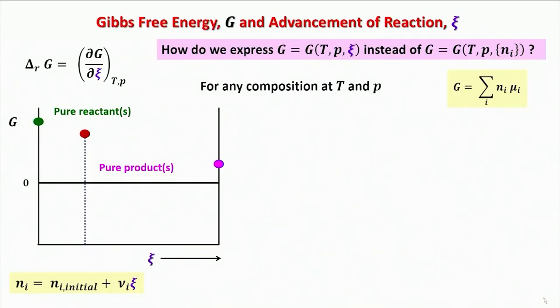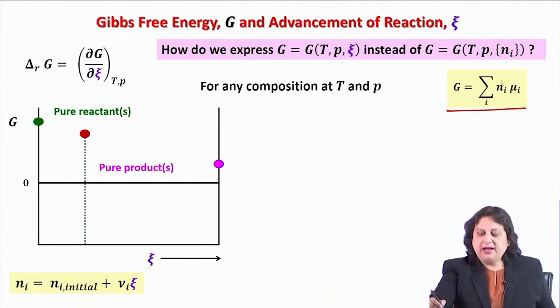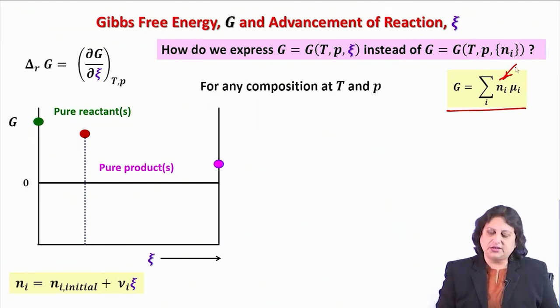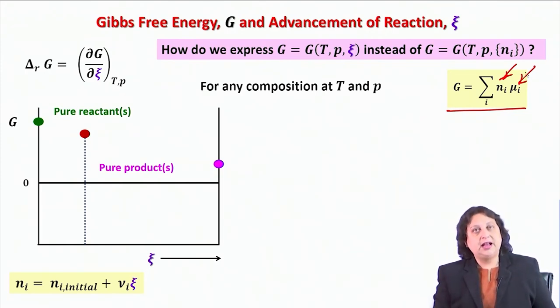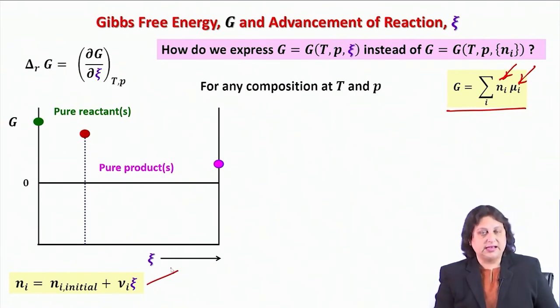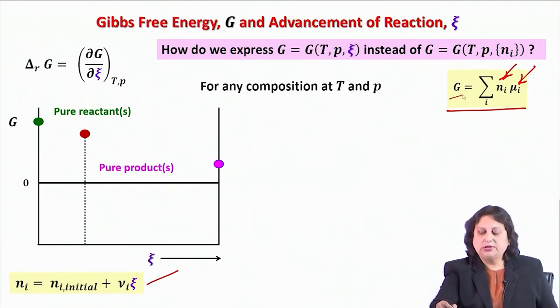Hello students. We are discussing the interpretation of thermodynamics with respect to chemical reaction equilibrium. We are discussing how to express the Gibbs free energy at a given temperature and pressure in terms of the degree of advancement of a chemical reaction. For any composition, temperature, and pressure, G is given by a sum of Ni times μi, where Ni is the number of moles of the i-th component — which may be a reactant or product — and μi is the chemical potential of that component. Since Ni is a function of ψ, G is also going to be a function of ψ.